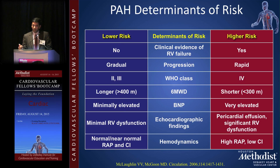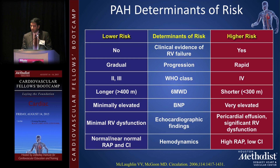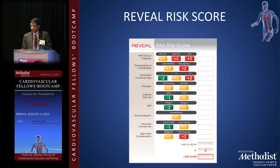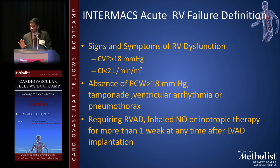In terms of risk stratification, RV failure — whether clinical or echocardiographic — indicates higher risk. As in heart failure, worse functional class predicts poorer outcomes. A risk score was recently developed to assess patients with pulmonary hypertension.